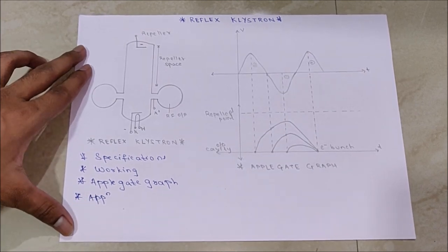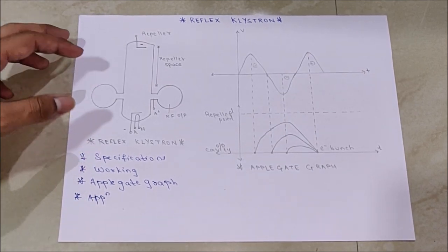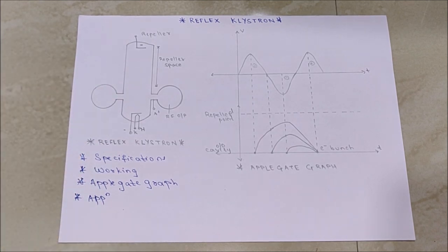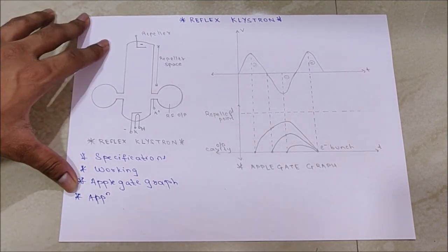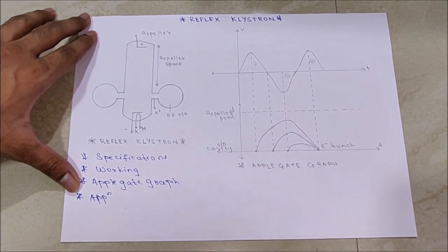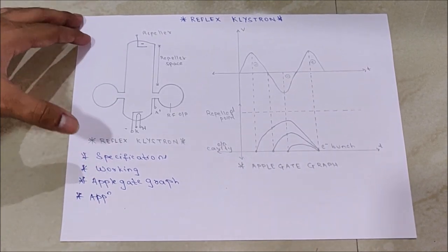Two cavity klystron, which I covered in my previous video, is an amplification device for microwave frequencies. This device, reflex klystron, is used for oscillations.